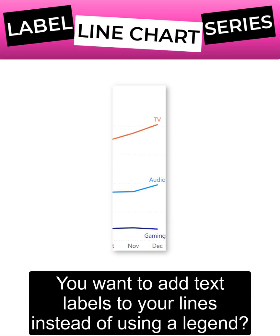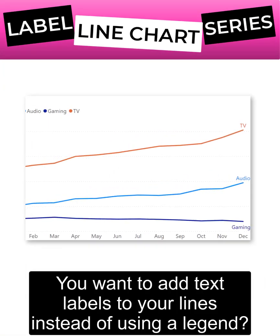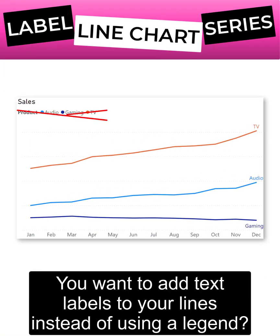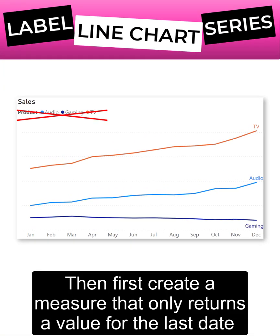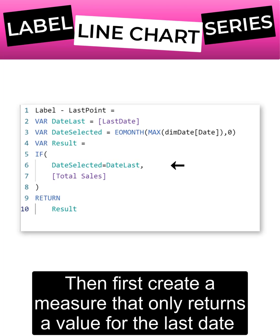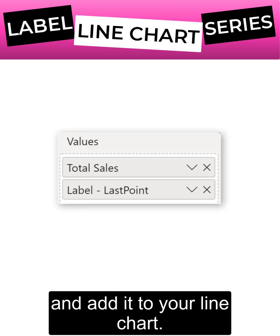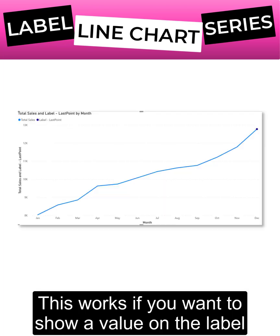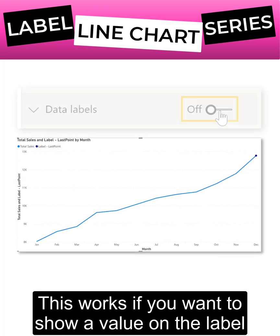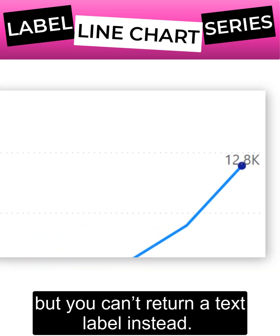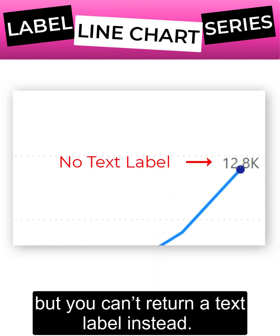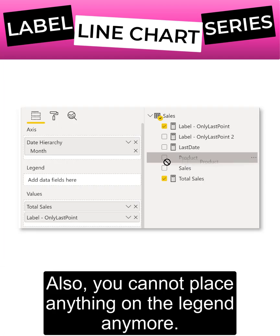Want to add text labels to your lines instead of using a legend? First, create a measure that only returns a value for the last date and add it to your line chart. This works if you want to show a value on the label, but you can't return a text label instead. Also, you cannot place anything on the legend anymore.